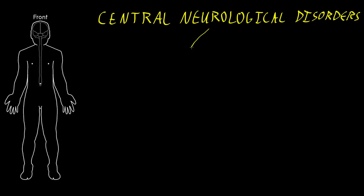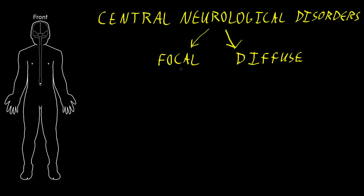Just like with the peripheral neurological disorders, I like to divide these into focal versus diffuse disorders. The disorders that cause focal syndromes can affect either the spinal cord or the brain, and many types of pathology commonly cause focal central neurological syndromes, including idiopathic, vascular, mechanical, autoimmune, and neoplastic disorders.